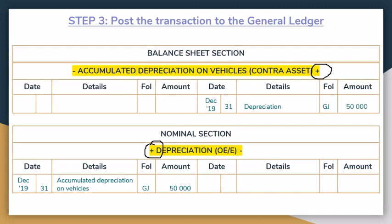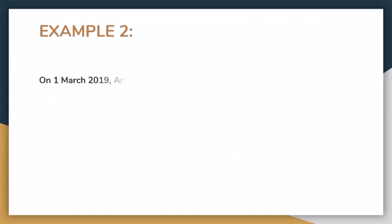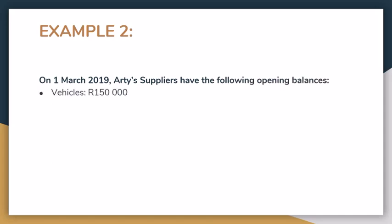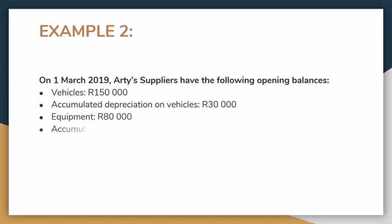Example 2 says on the 1st of March 2019, RT Suppliers have the following opening balances: there's vehicles, accumulated depreciation on vehicles which is a contra asset account — this just means that we had the vehicles in the past and so far they lost 30,000 of their value. Also equipment in the business and also an accumulated depreciation on equipment account. It's very important that you see that we've got two separate accumulated depreciation accounts — one for vehicles, one for equipment. And these are our opening balances.